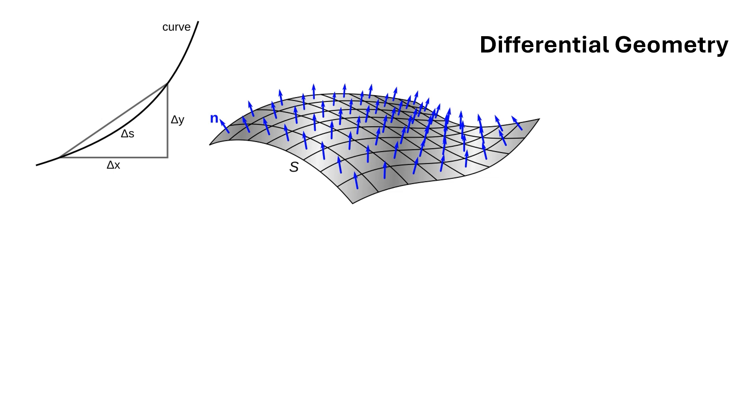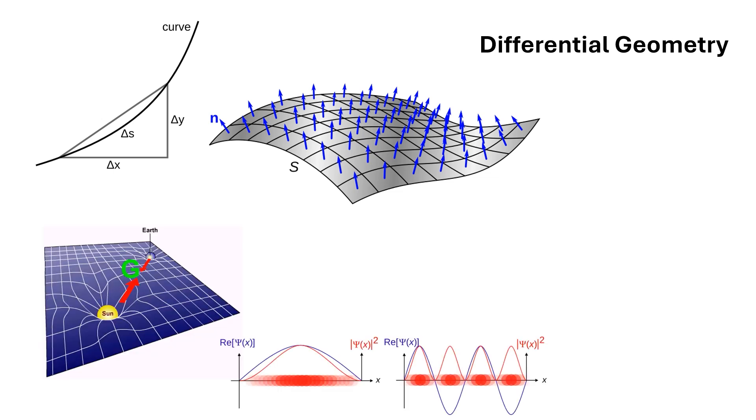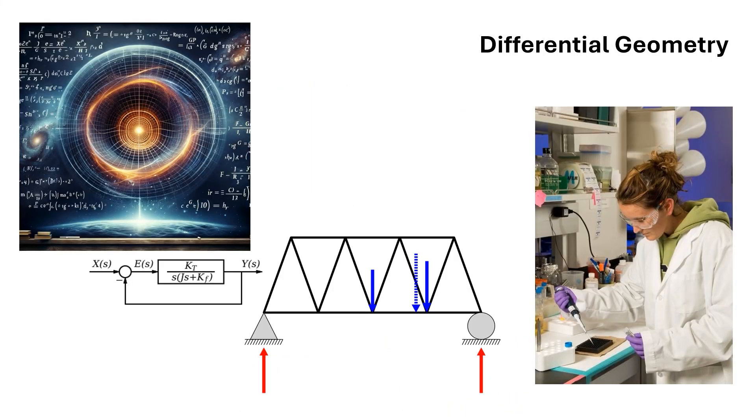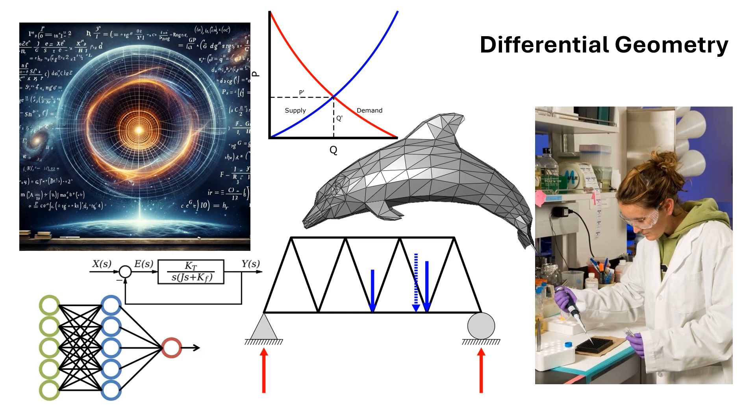Differential geometry is the language of general relativity, quantum field theory, and the standard model of physics. It finds applications in physics, chemistry, engineering, control theory, economics, computer graphics, machine learning, and more.